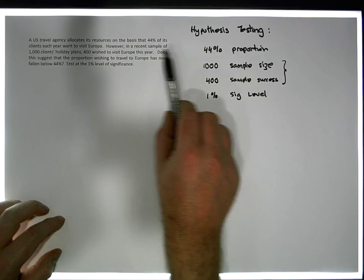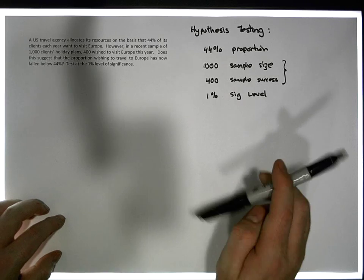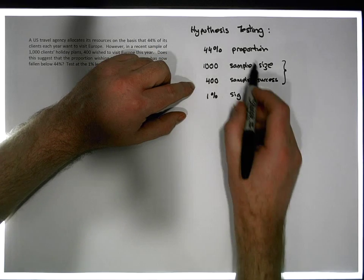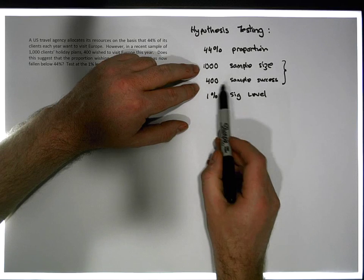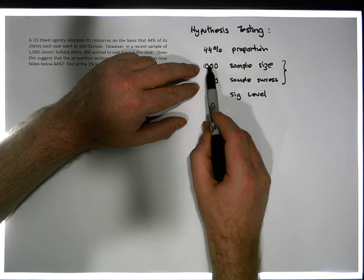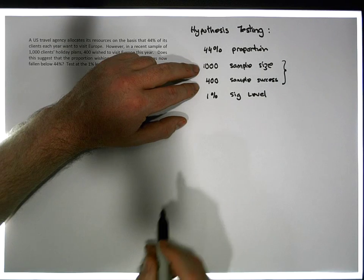So actually all we've been given is proportions. And in particular, we have sample proportions. So in this particular case, this particular test is talking about a proportion. We're going to test this sample proportion against this population proportion.